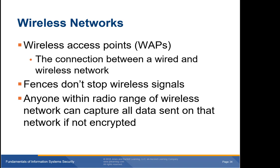Wireless access points (WAPs) are the connection between a wired and wireless network. WAPs are radios sending and receiving networking information over the air. Anyone within radio range of a wireless access point can communicate with it and attempt to connect to the network. Attackers understand that wireless networking extends your network beyond your walls — walls and fences don't stop wireless signals. It's much easier to eavesdrop on a wireless network than a wired one, and if data is unencrypted, it is fair game for an attacker.